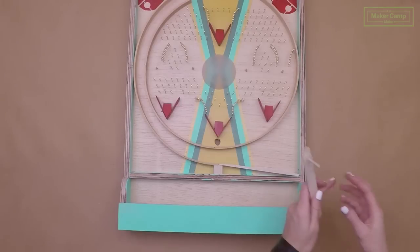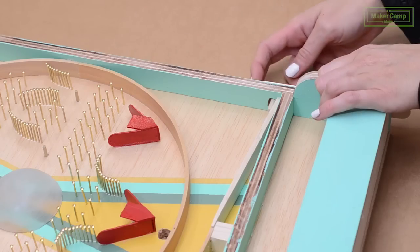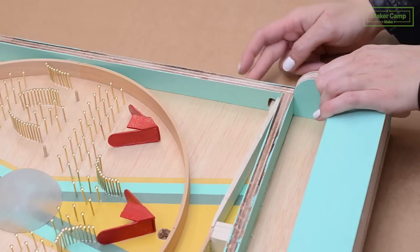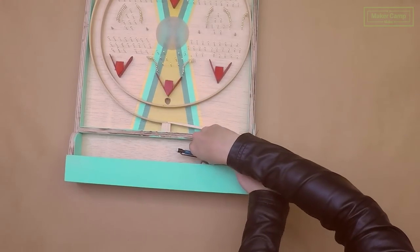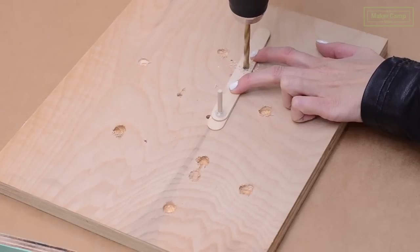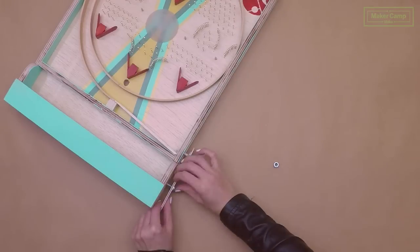Now we're going to attach our launcher. This part also takes a little bit of fine tuning. So make sure you fiddle with it enough to get your ball to launch pretty directly and pretty fast. Use your bolt, washer, and nut to attach your launcher.